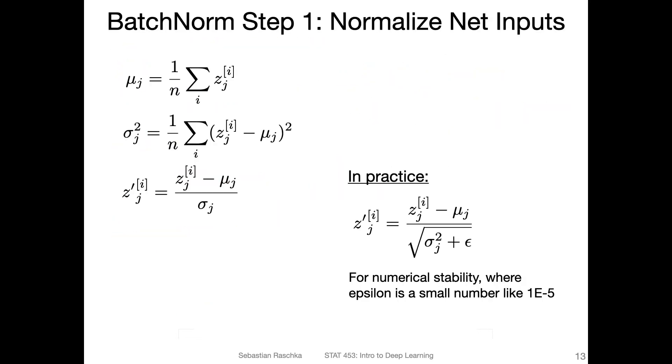In practice, we modify this standardization slightly such that we don't bump into division-by-zero issues if the variance is zero. So for numerical stability, we add a small value epsilon here, like 1e-5. That's just a small computational trick to prevent division-by-zero errors.